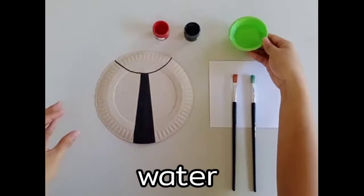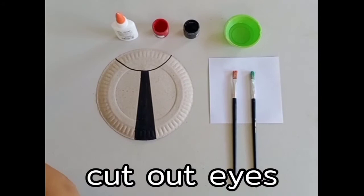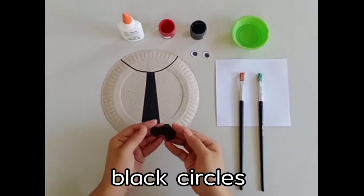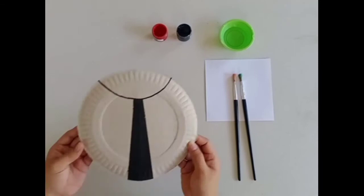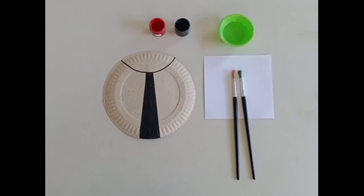Let's begin. Get your paper plate and place it on the table. As you can see, the paper plate is divided into three parts: the head and the left and right wings of the ladybug.